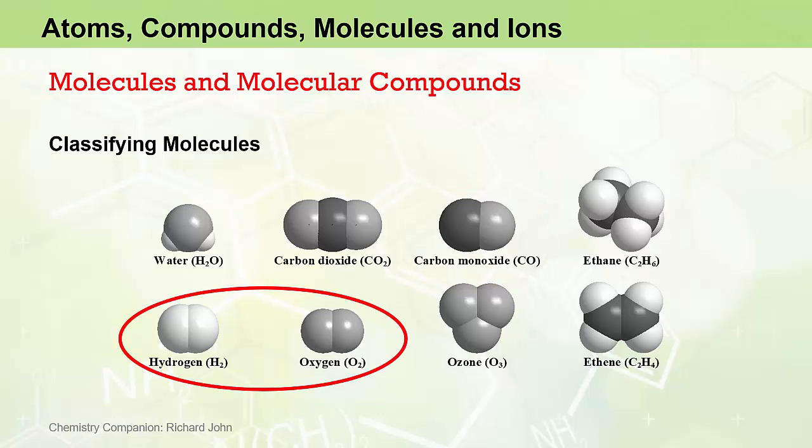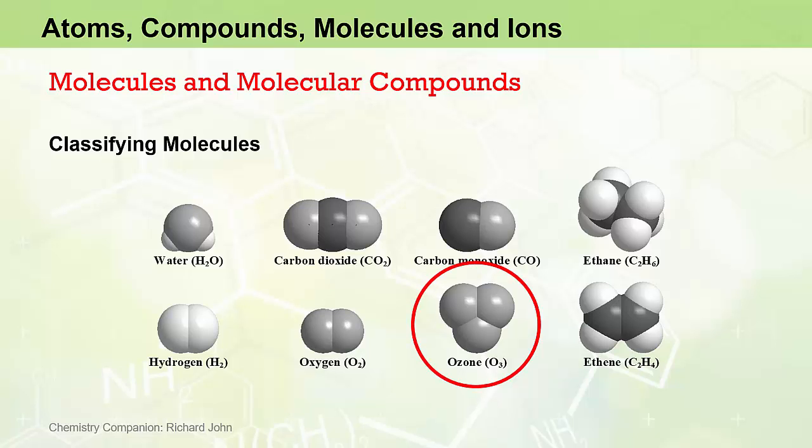We've got diatomic elemental molecules — molecules containing exactly two atoms and being elements because they contain only one type of atom in their structure. And we have a polyatomic elemental molecule, ozone or O3, being a second allotrope of elemental oxygen.